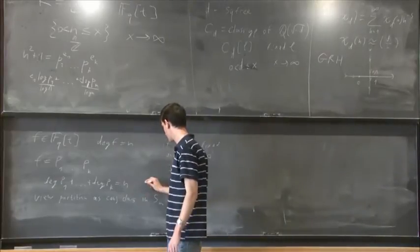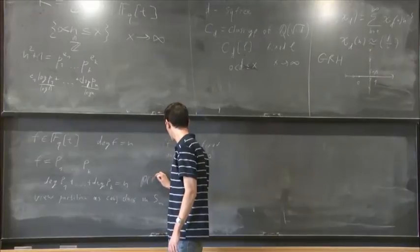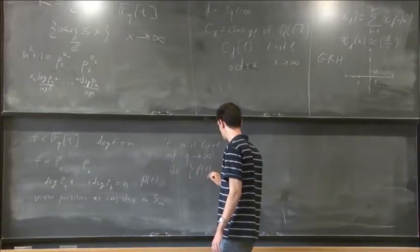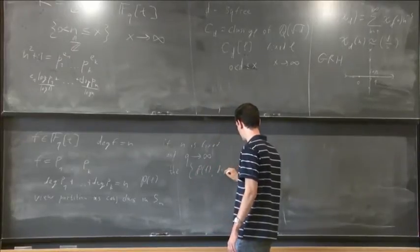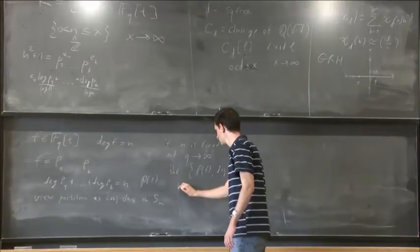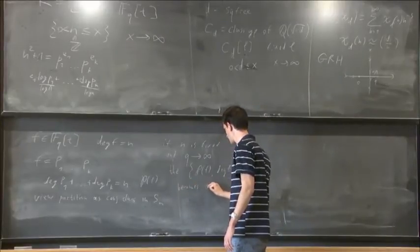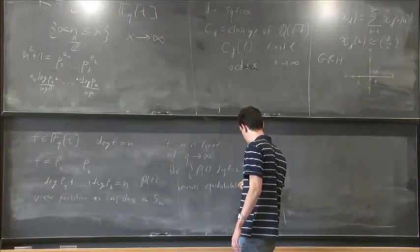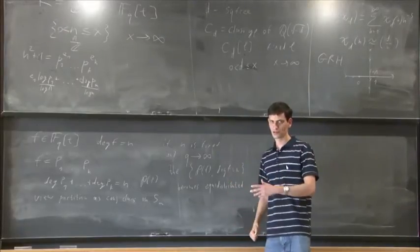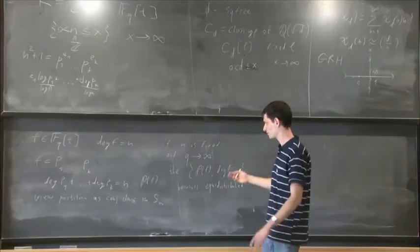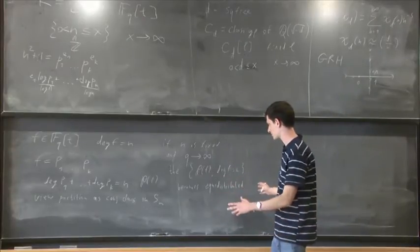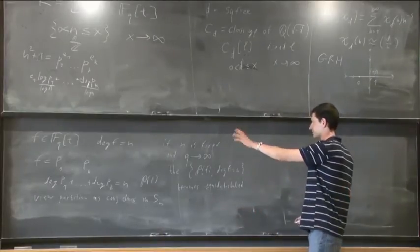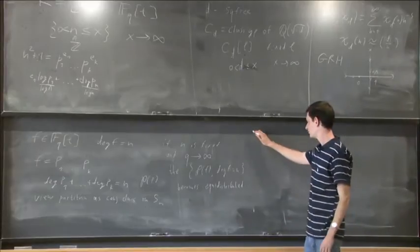So let's call this partition p(f). The set of p(f) for all f becomes equidistributed. Of course, one may also consider the other limit where q is fixed and n goes to infinity, but then one needs to formulate the right questions because the space where we want equidistribution varies. So we need to reformulate slightly the question, but there are results about that.